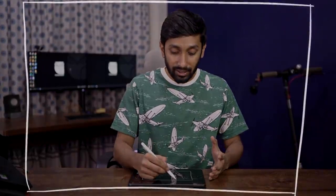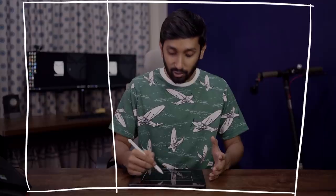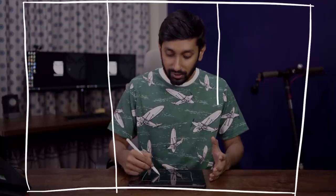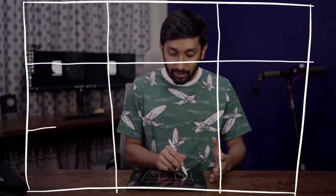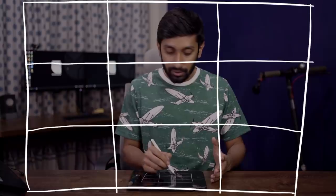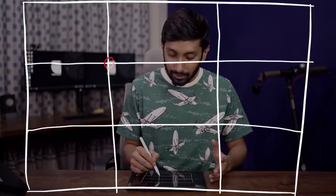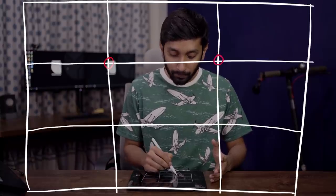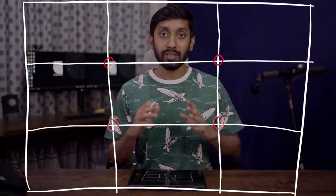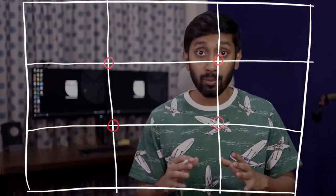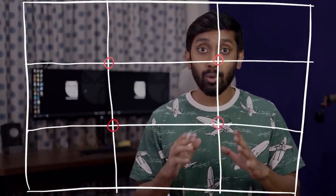The rule of thirds is very simple. The principle is that we divide the rectangle — when we divide the rectangle, we basically have 4 intersecting points: 1, 2, 3, 4. The rule is that we place the subject along these intersecting points.